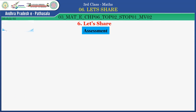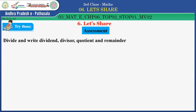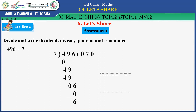Children, try this: divide and write the dividend, divisor, quotient, and remainder. 496 divided by 7. Recall the 7 times table and do this problem along with me. Dividend is 496, divisor is 7, quotient is 70, and remainder is 6. Very good, children.